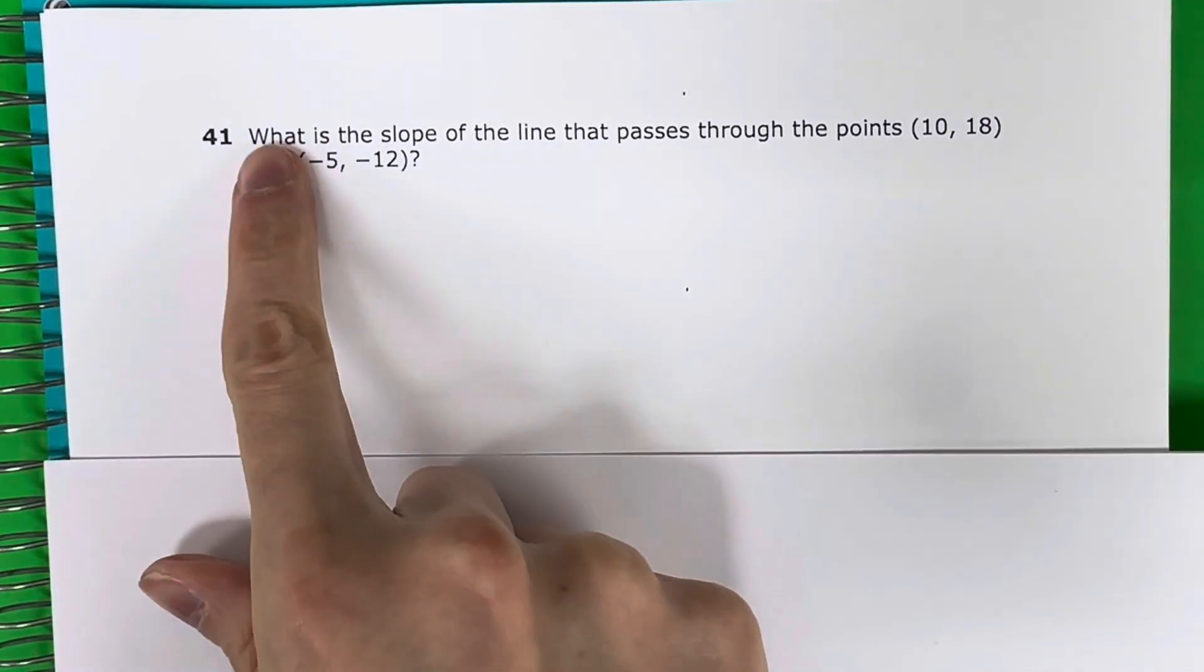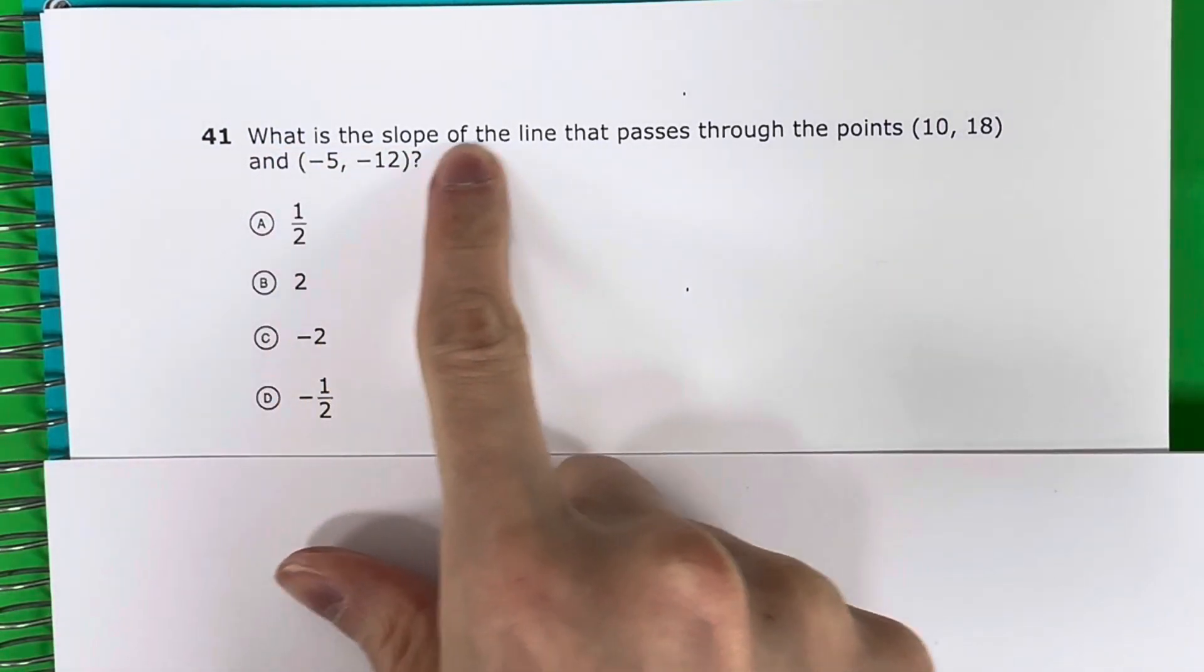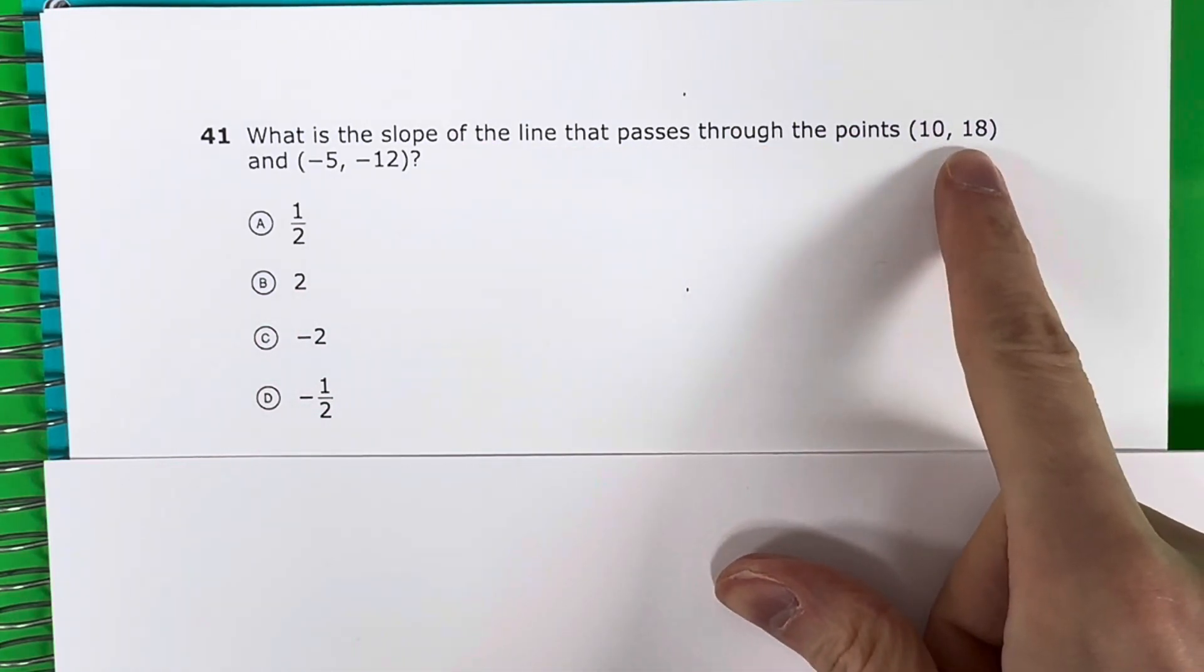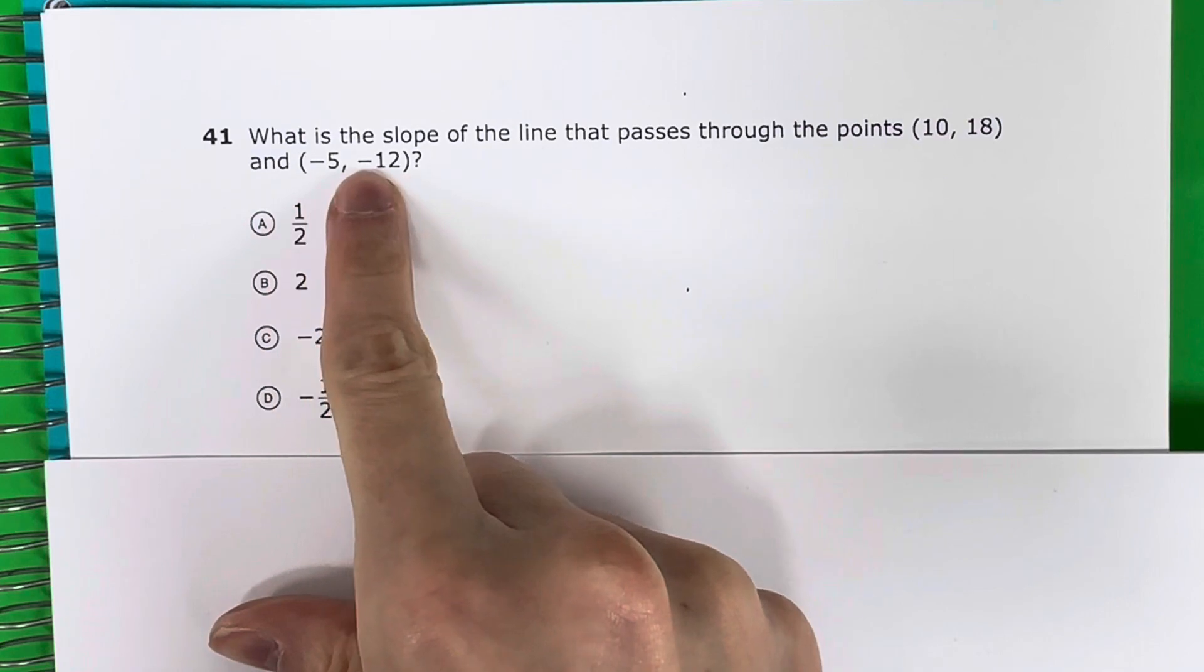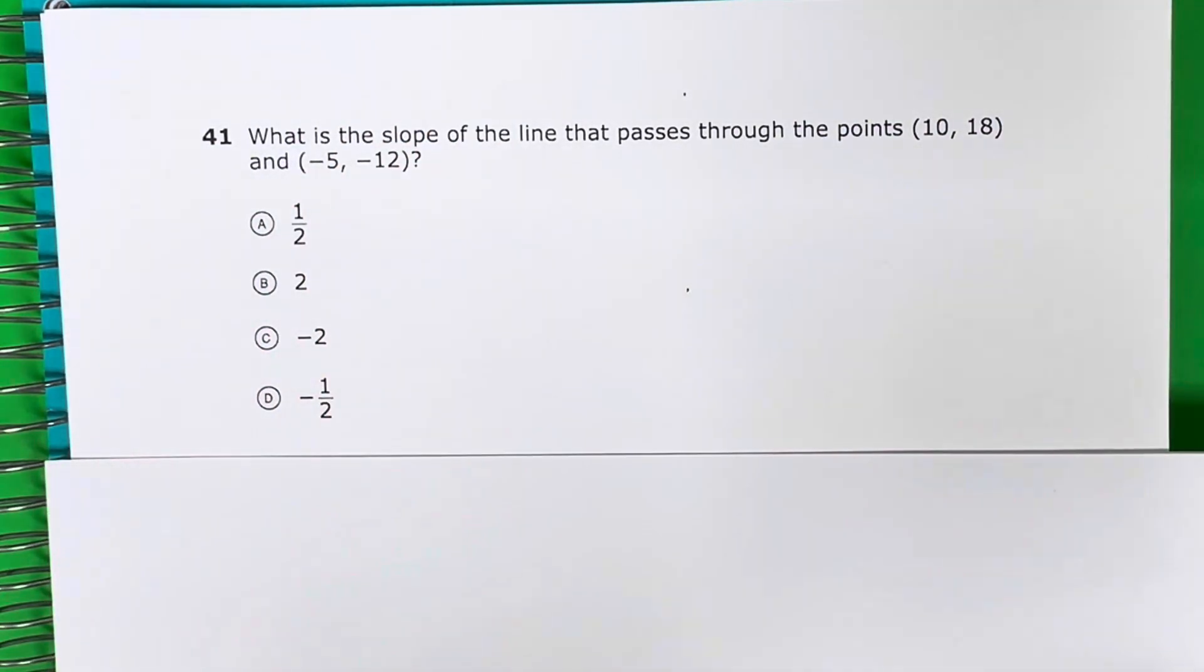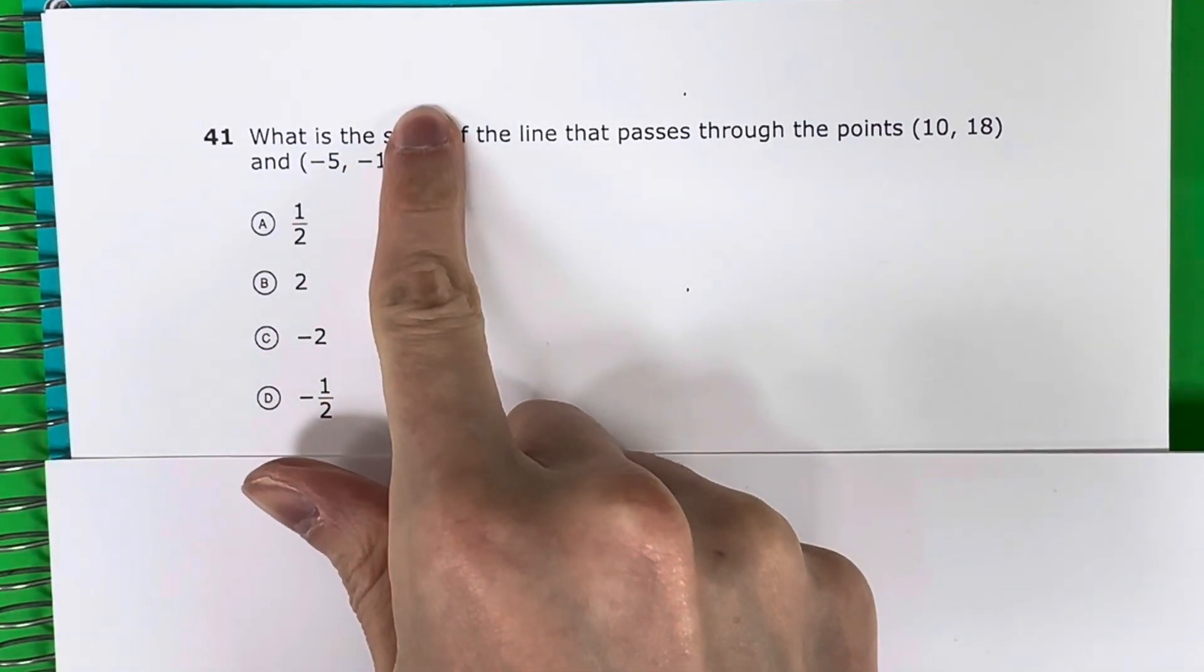Question 41. What is the slope of the line that passes through the points (10, 18) and (-5, -12)? The key word here is slope. I want you to go ahead and circle that.